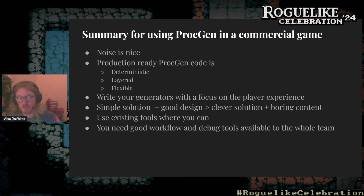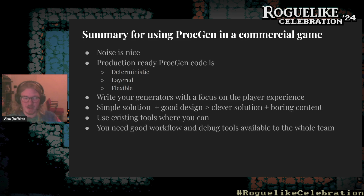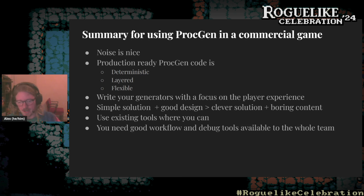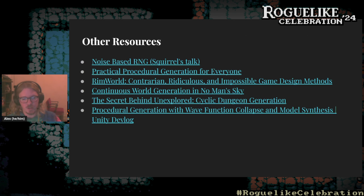To summarize: noise methods are great — use them. In production procedural generation, make sure it's deterministic, layered, and flexible so you can adjust based on player feedback. Write your generators with a focus on player experience. A simple solution with good design and good content is always better than a clever algorithm you haven't really thought through. Use existing tools wherever possible — if you're making a commercial game, you need to actually ship, and you need workflow tools that enable your whole team to contribute.